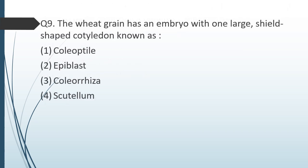Question number nine: the wheat grain has an embryo with one large shield-shaped cotyledon called — coleoptile, epiblast, coleorhiza, or scutellum? The correct answer is option four, scutellum.